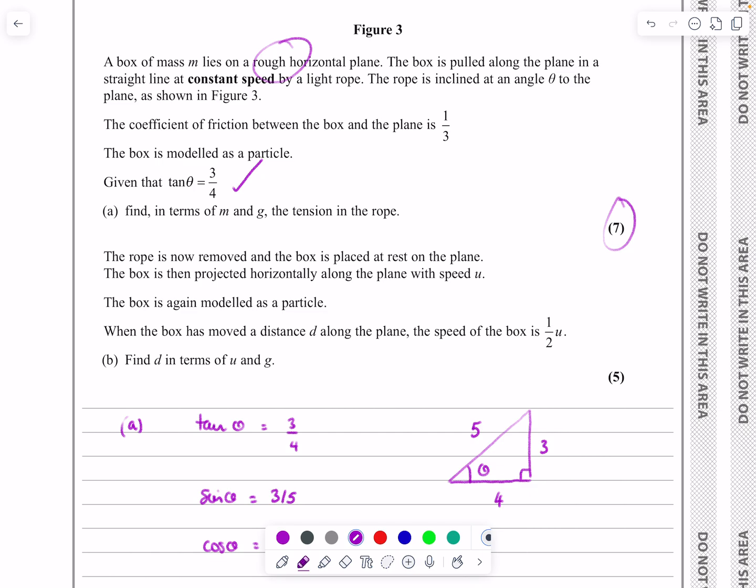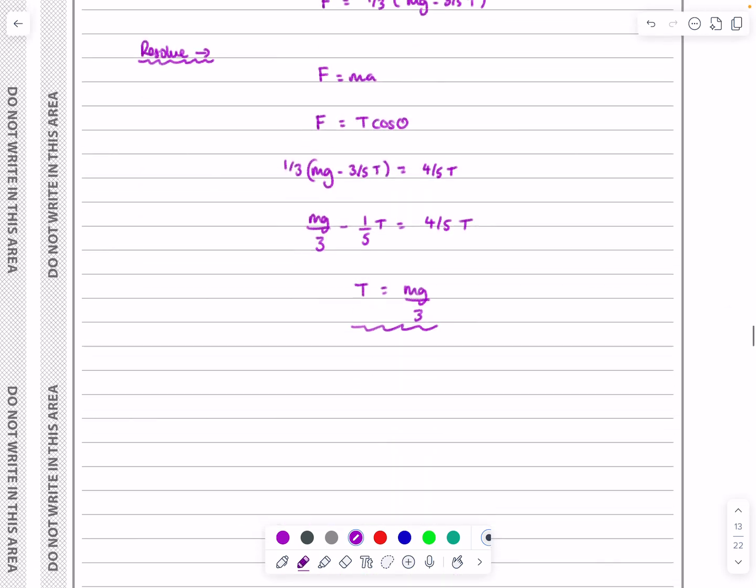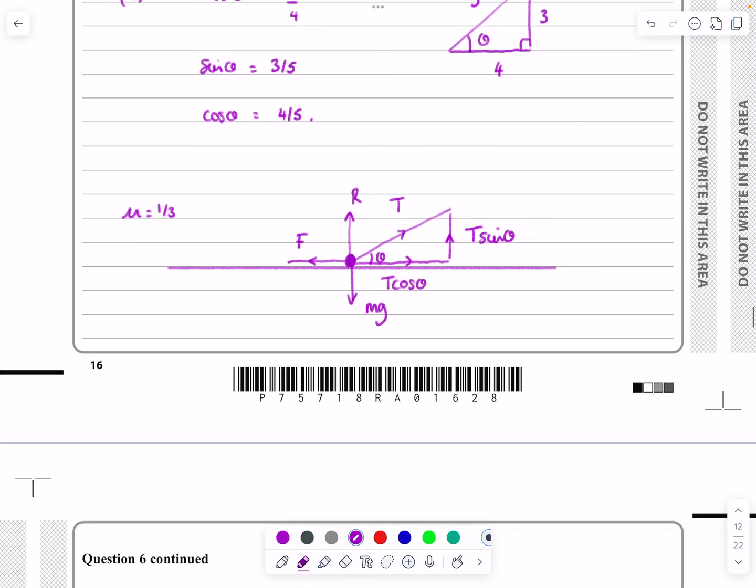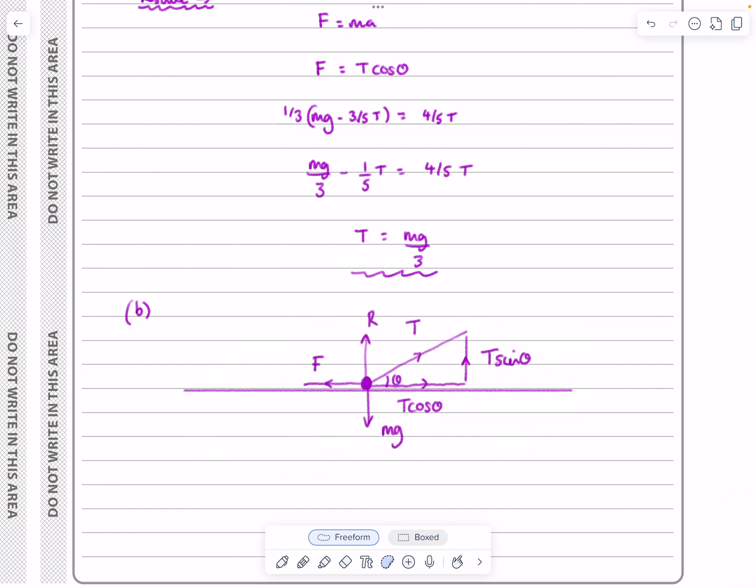The rope is now removed and the box is placed at rest on the plane. The box is then projected horizontally with a speed of u. The box is again modeled as a particle. When it's moved a distance d along the plane, the speed of the box is half u. This is looking like a kinematics question. Can we find d in terms of u and g? Absolutely we can. Let me copy this diagram. There's no tension, the rope is gone, so that's my force diagram now.